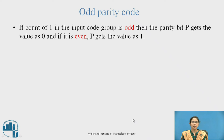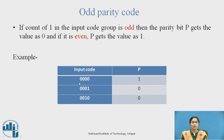For Odd Parity Code: if the count of 1 in the input code group is odd, then parity bit P gets the value 0. If it is even, then P gets the value 1. In this example, the count of 1 is even, so P gets the value 1 to make the total code an Odd Parity Code. In another two examples, the count of 1 is odd, so P gets the value 0.